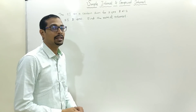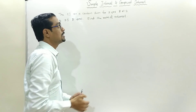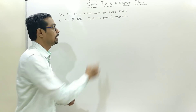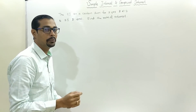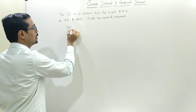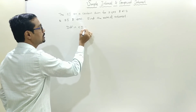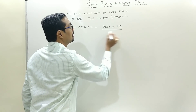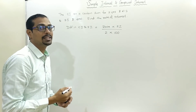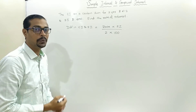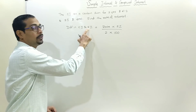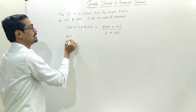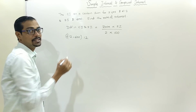Continuing with the same example. The compound interest on a certain sum for 2 years is 612, and simple interest is 600. Find the rate of interest. Very, very simple. The difference between compound interest and simple interest equals rate multiplied by simple interest, divided by 2 into 100. Please remember this formula — it is helpful only for 2 years. Difference in compound and simple interest: 612 minus 600 equals 12.